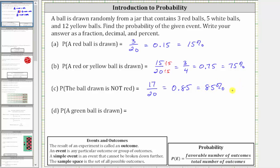For the last example, we want to find the probability a green ball is drawn. Notice there are no green balls in the jar, and therefore there are zero favorable outcomes, giving us a probability of zero divided by 20, which simplifies to zero, equal to zero percent.